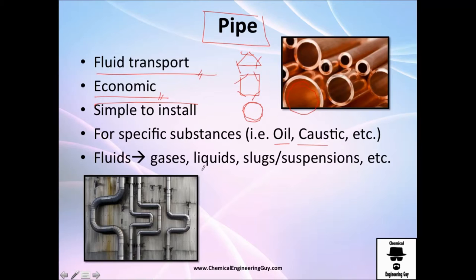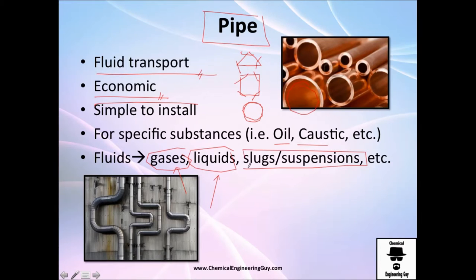You can have many types of fluids transported through pipes — for example, gases, liquids (which is what we're studying right now), and slugs and suspensions, which is a very interesting topic: a liquid and a solid, or a liquid and a gas mixture, which acts as a fluid.